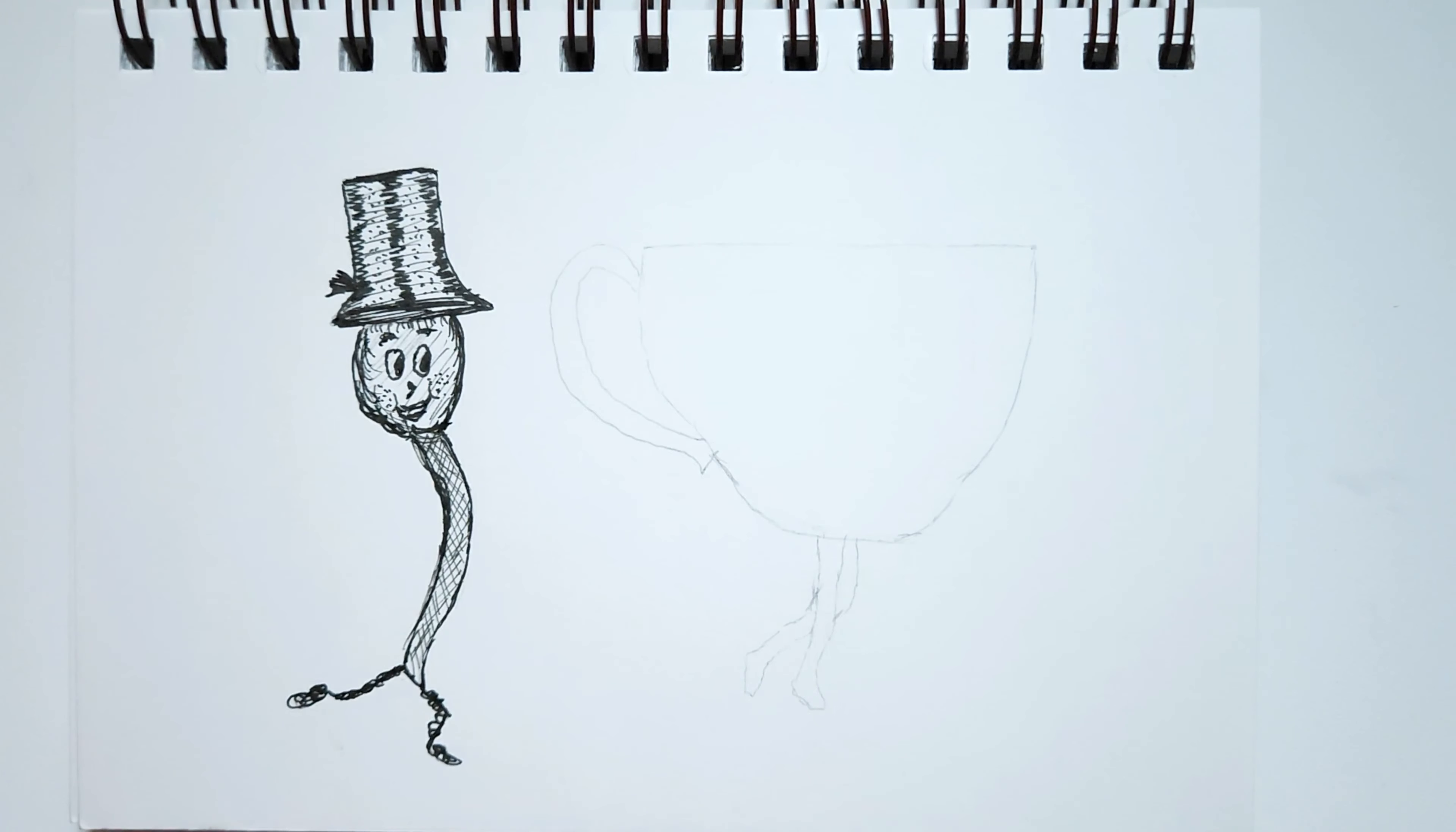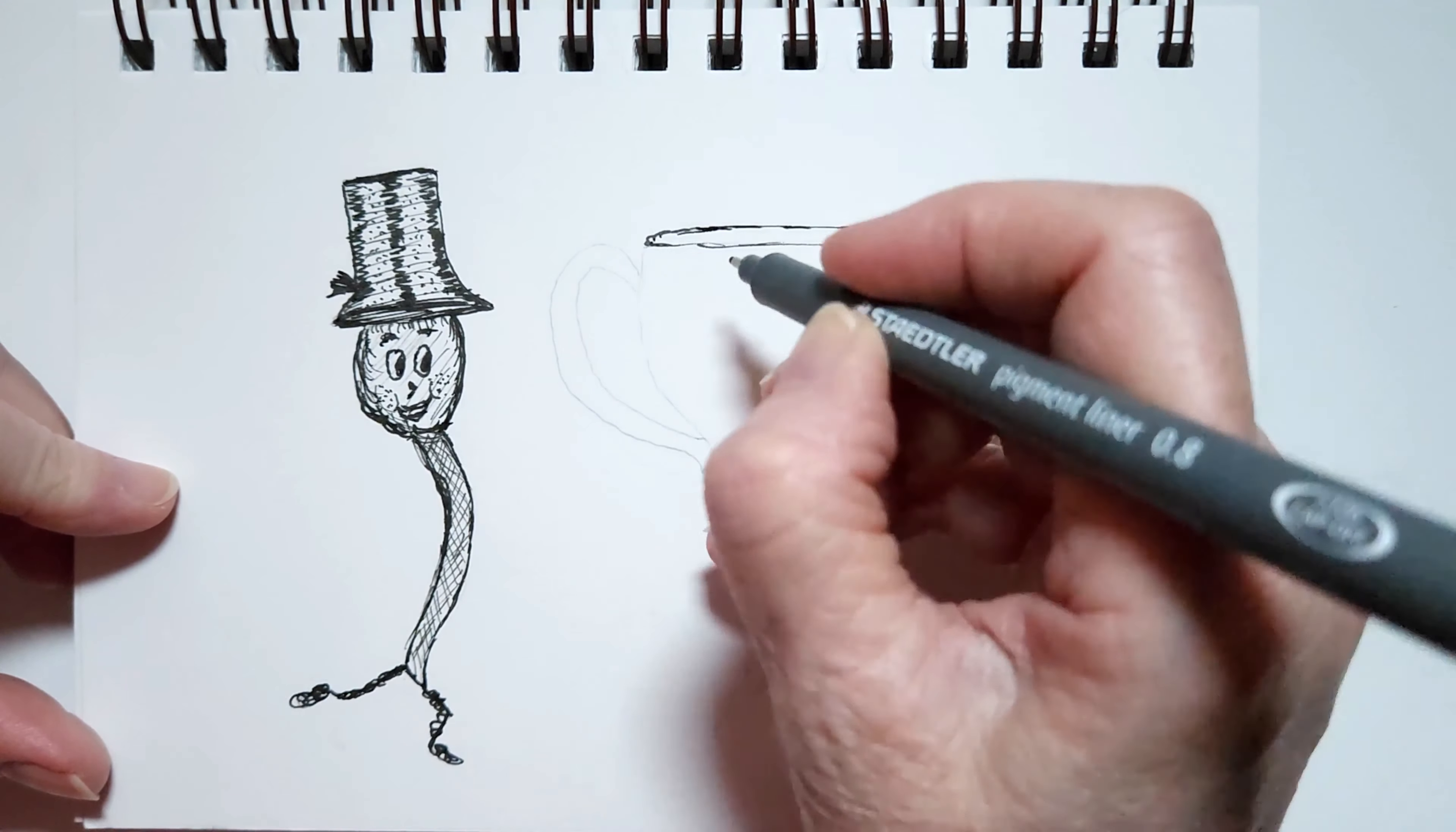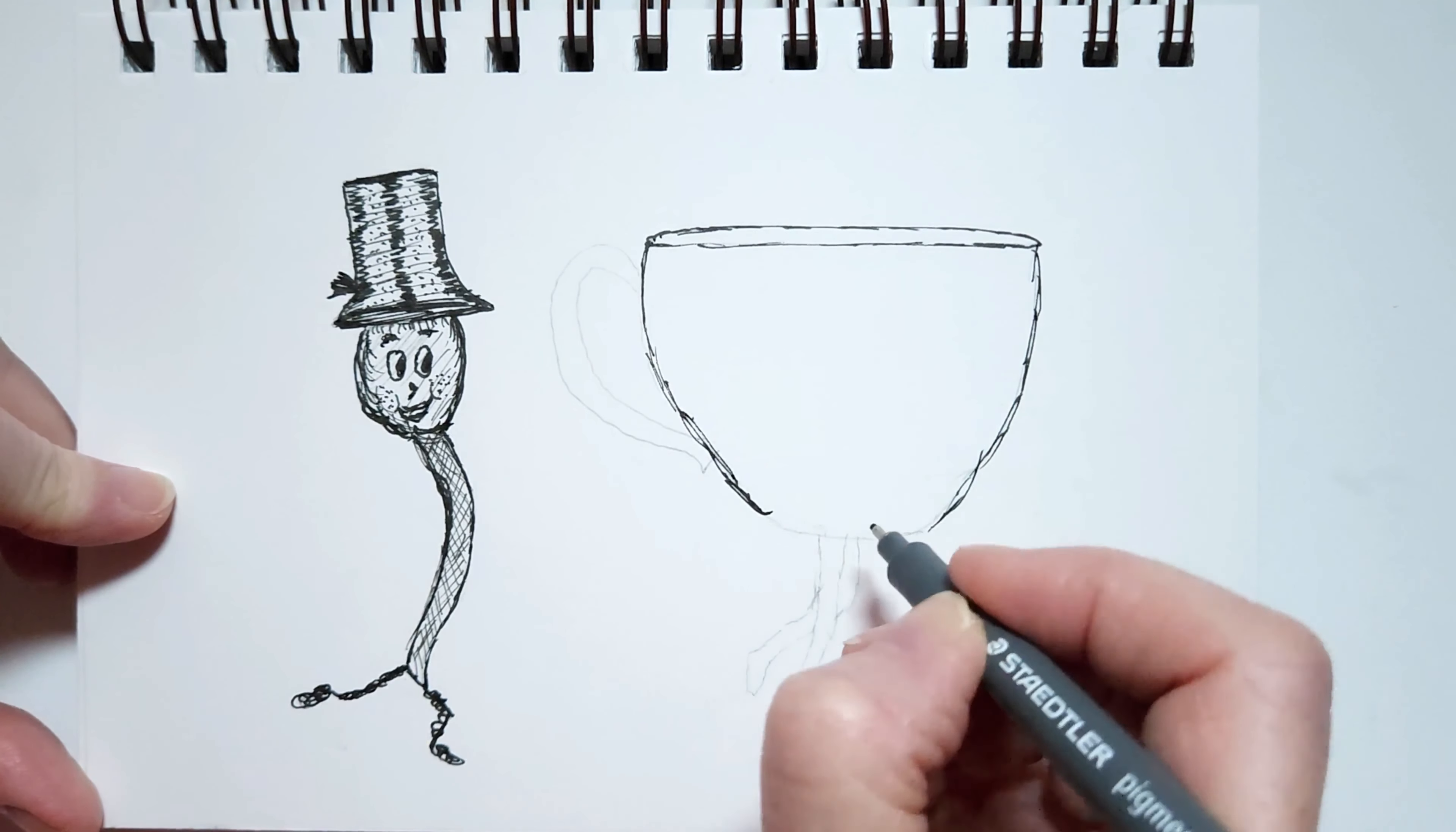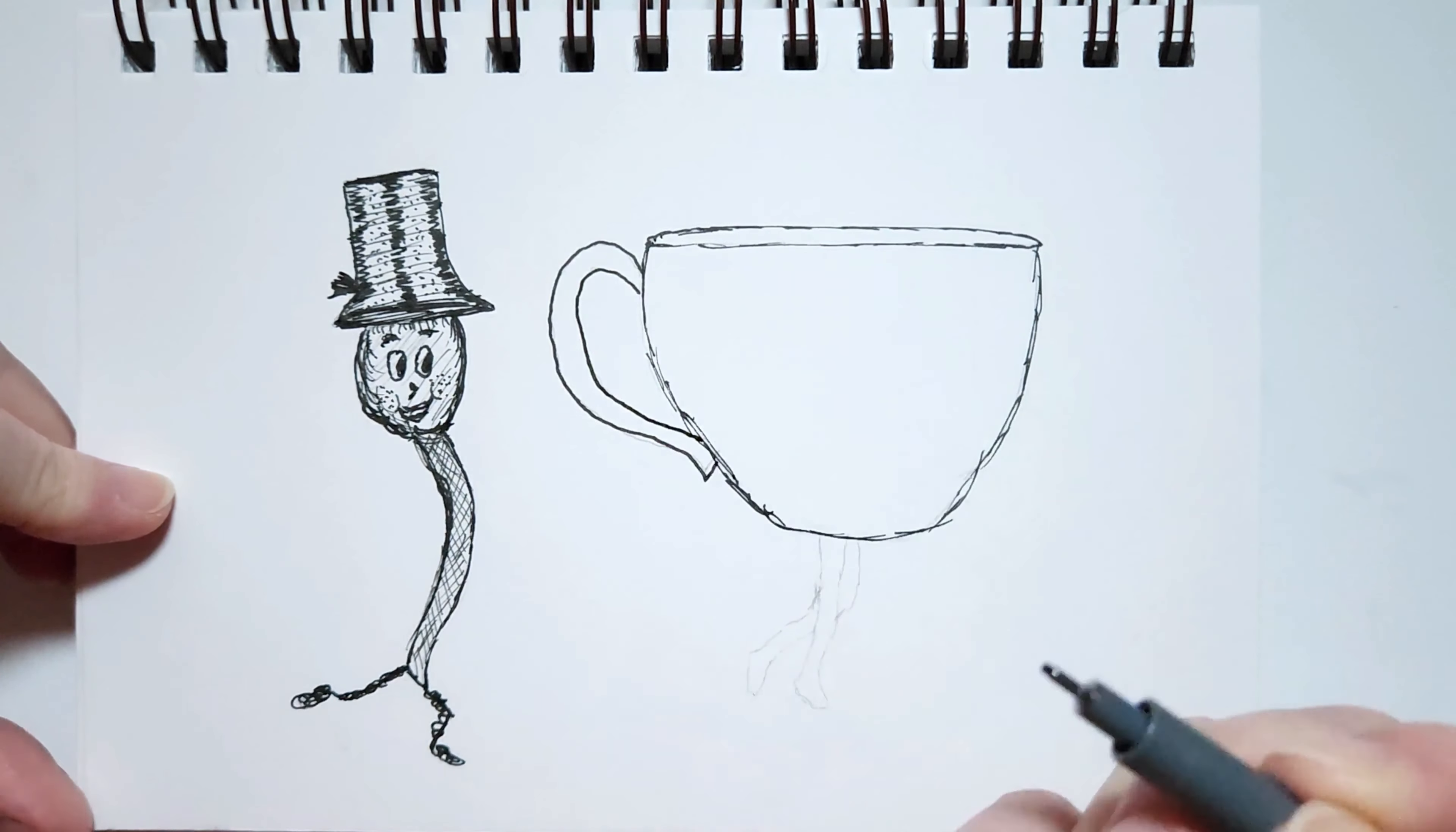Now I'm going to take that 0.8 again. I'm just going to outline my cup and give her a little top here. There we go.